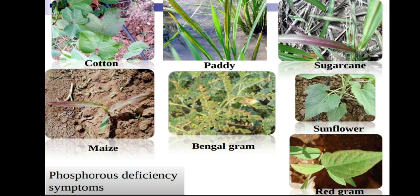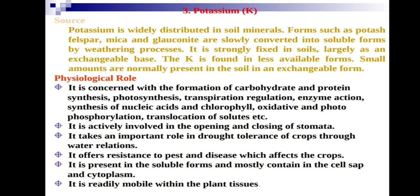The third primary nutrient is potassium. Potassium is widely distributed in soil in forms such as potassium mica and glauconite, which are slowly converted into soluble forms by weathering. It is strongly fixed in soil largely as an exchangeable base, and only a small amount is normally present in the soil in available exchangeable form.